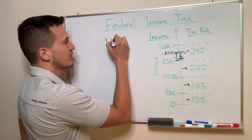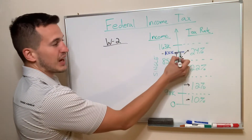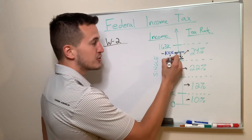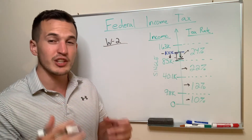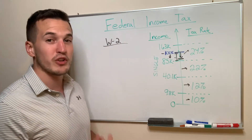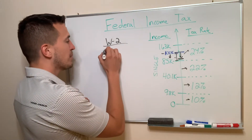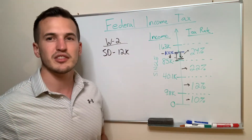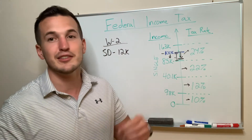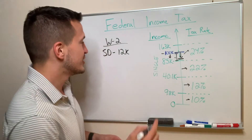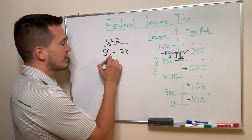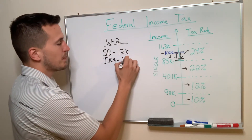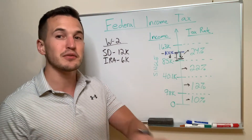As a W-2 employee, your job should be finding as many legal deductions as you can to drive down your adjusted gross income, which is what you pay tax on. Everybody gets the standard deduction — if you're single, that's $12,000, a freebie the government gives you. If you have a traditional IRA, you can deposit $6,000 to that tax-free, giving you another $6,000 deduction you didn't need to pay tax on because these accounts are tax-advantaged.